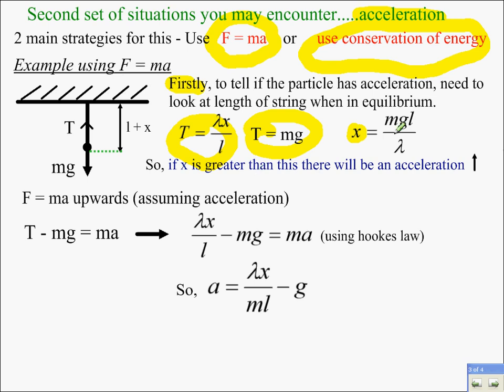So if x is greater than this, then obviously there'll be a resultant force on the particle creating an acceleration. So let's make that assumption. So if there's an acceleration, use F equals ma.